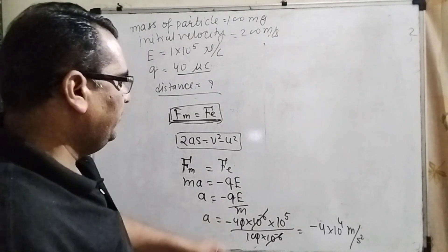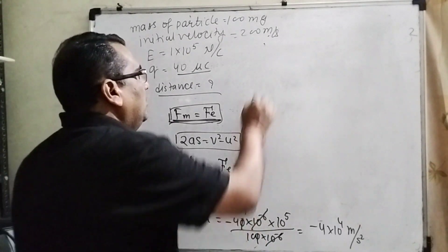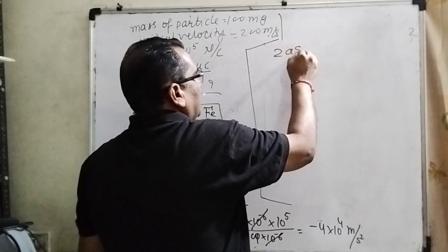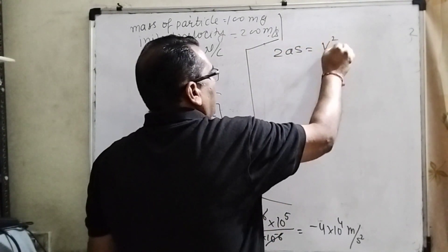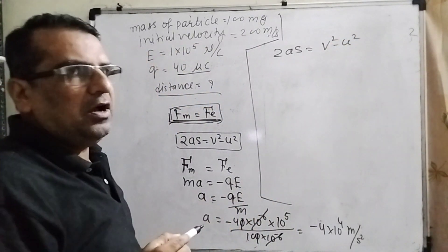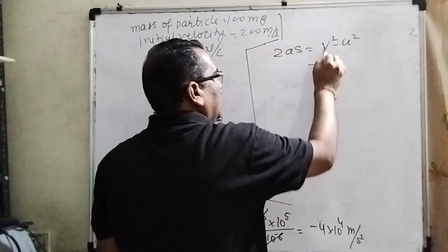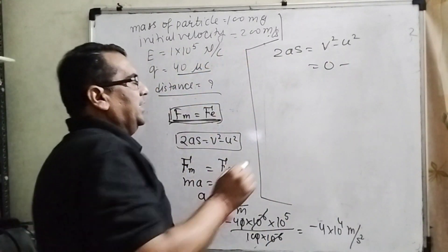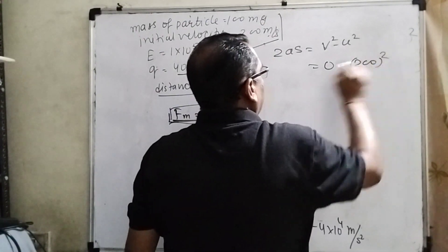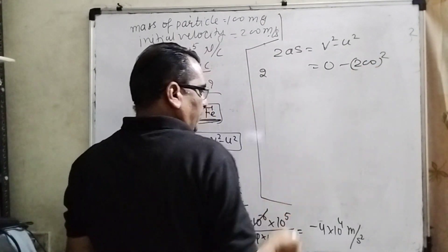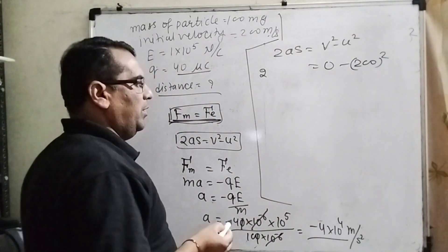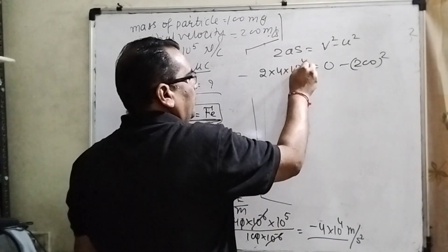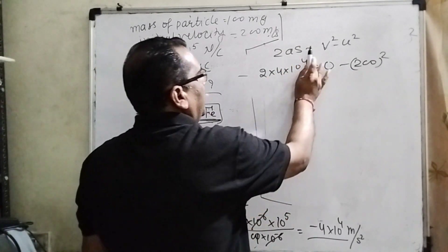So we have found the acceleration. Now, by using the equation 2as = v² - u², here final velocity of the particle is 0. Therefore, substitute the value 0. Initial velocity 200 meters per second, so 200 whole squared. And what is the value of acceleration? -4×10^4 into s.